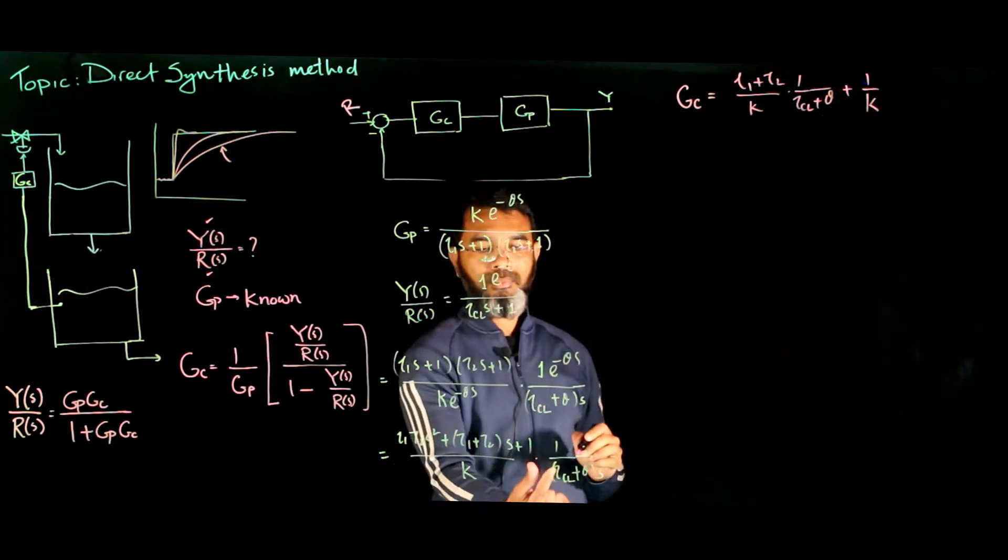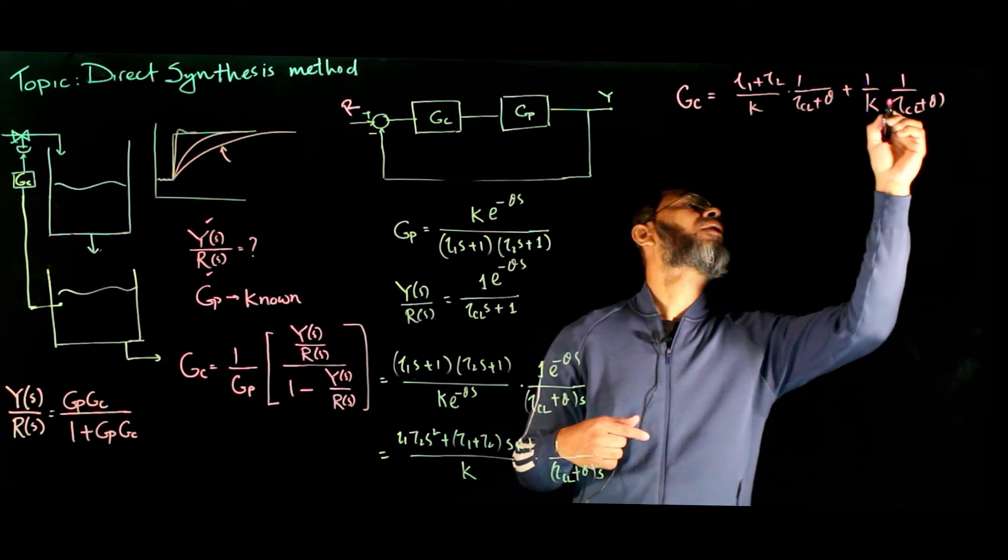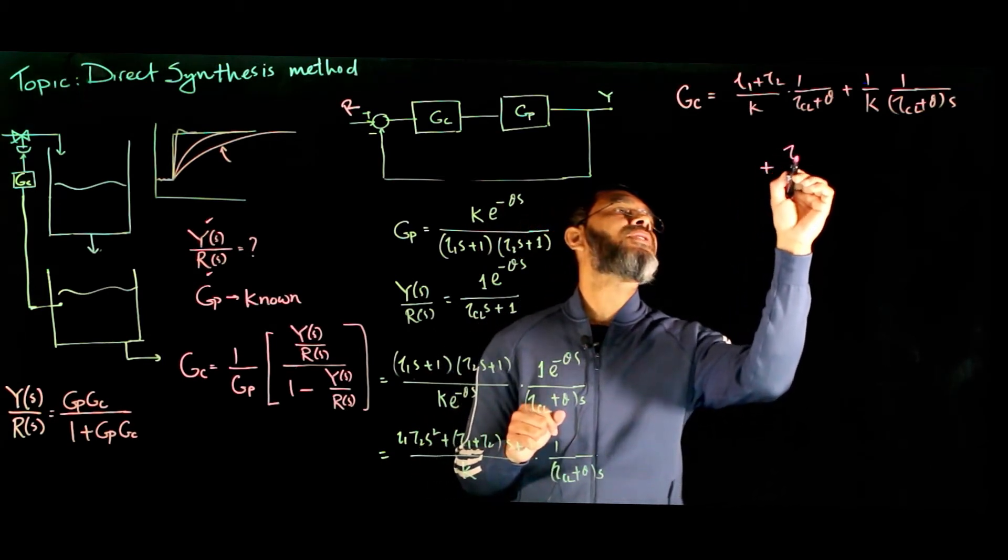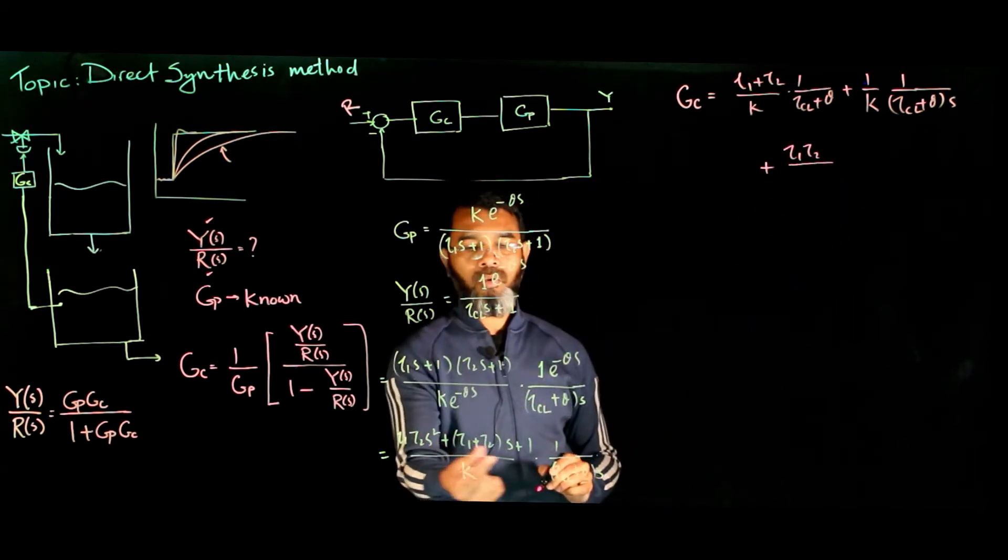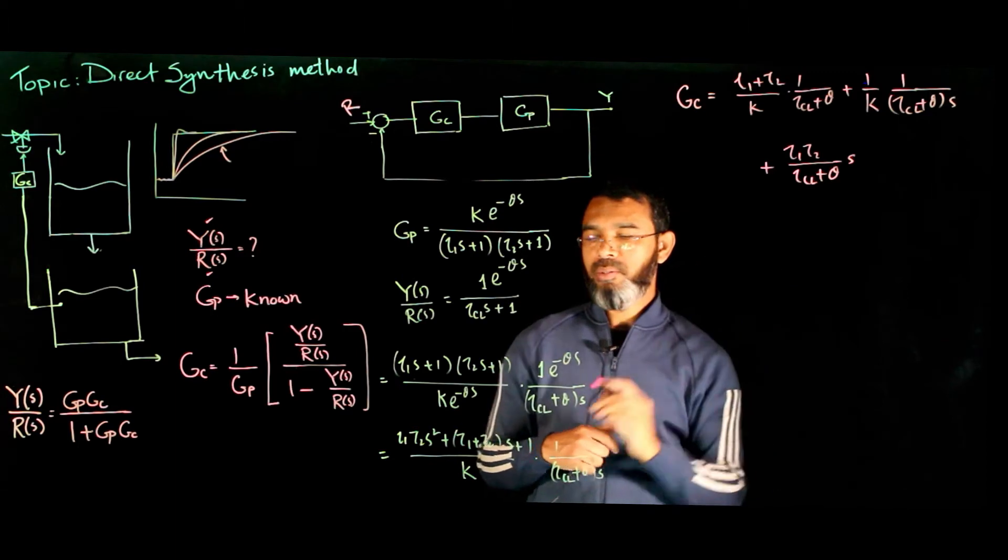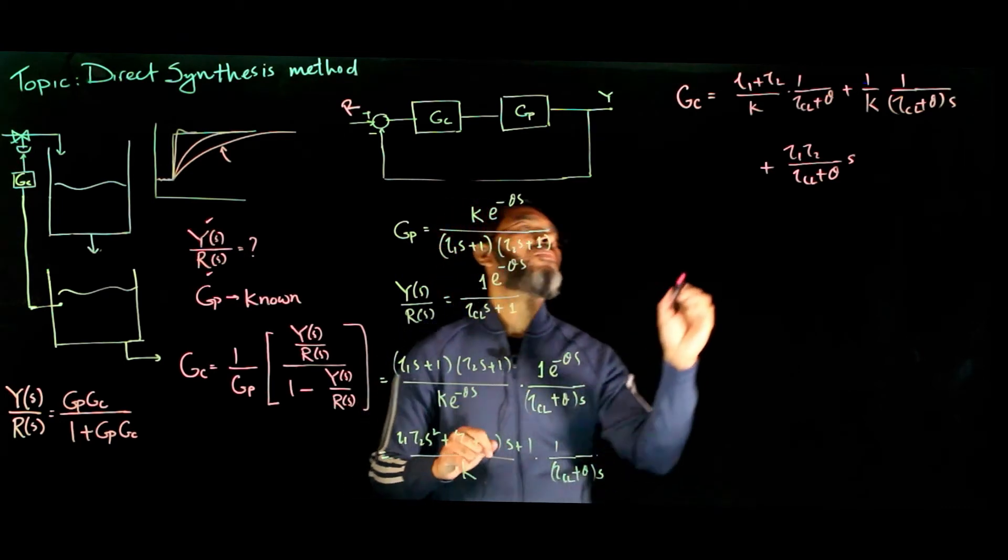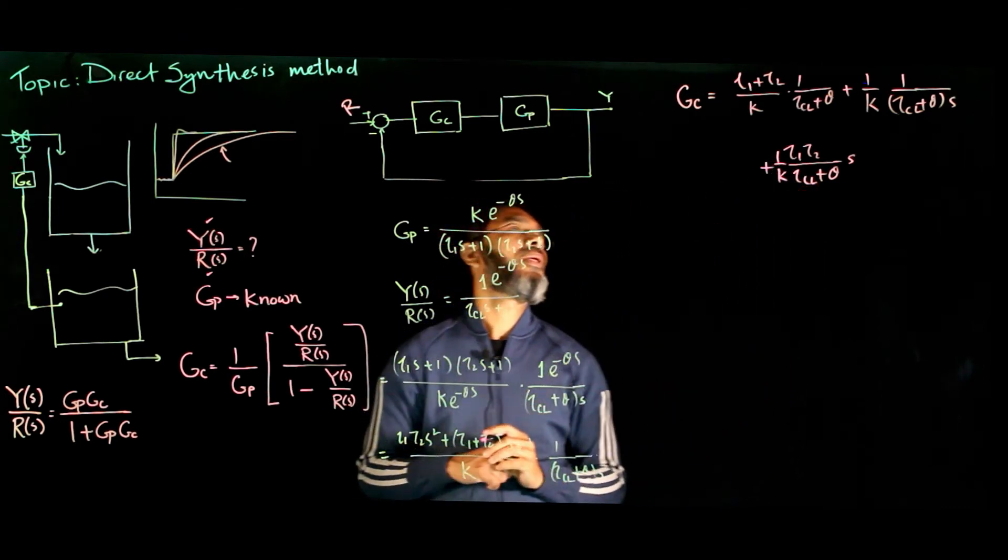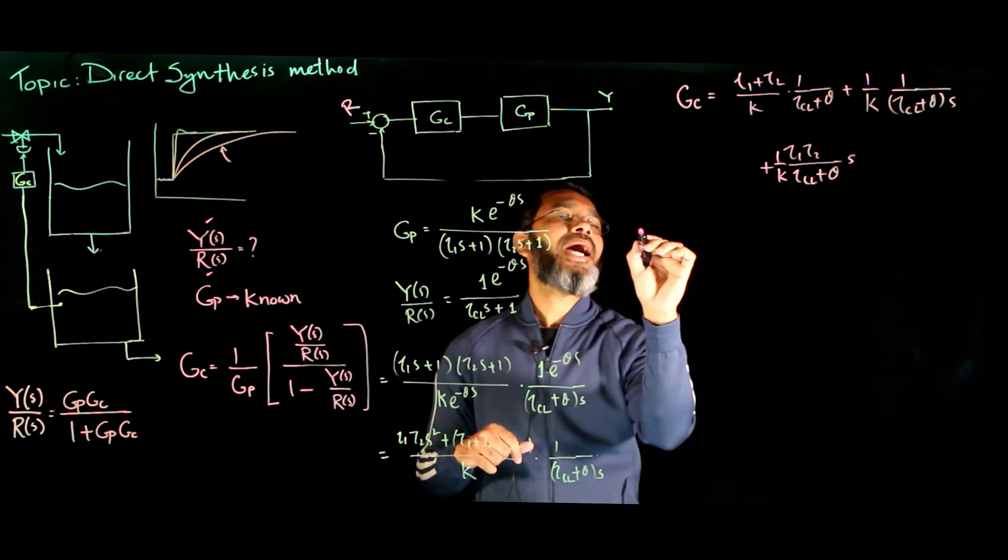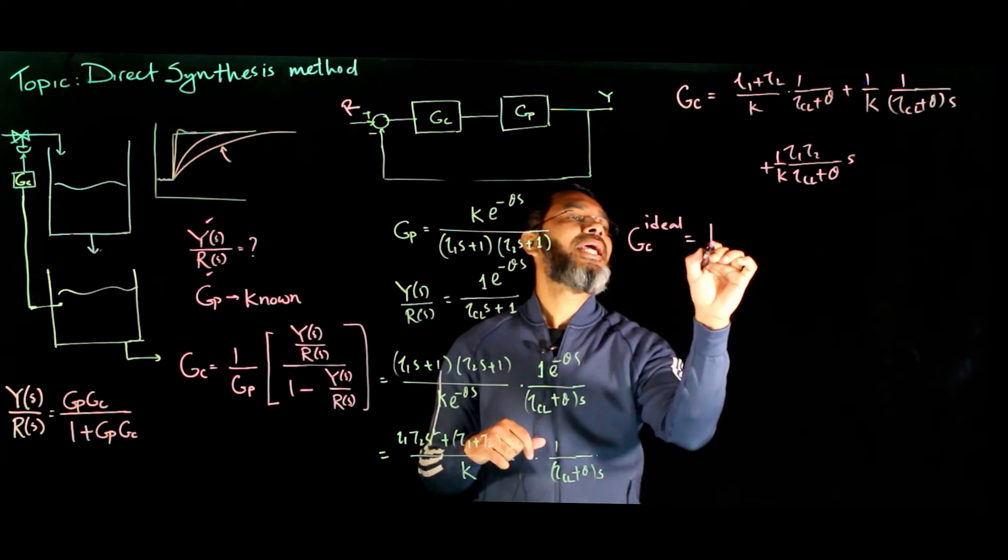So I will get tau 1 plus tau 2 over k over tau cl plus theta. Second term there. And we'll have the third term, I'll write first, so that will be tau cl plus 1 over k tau cl plus theta s, plus 1 over k tau cl plus theta s.